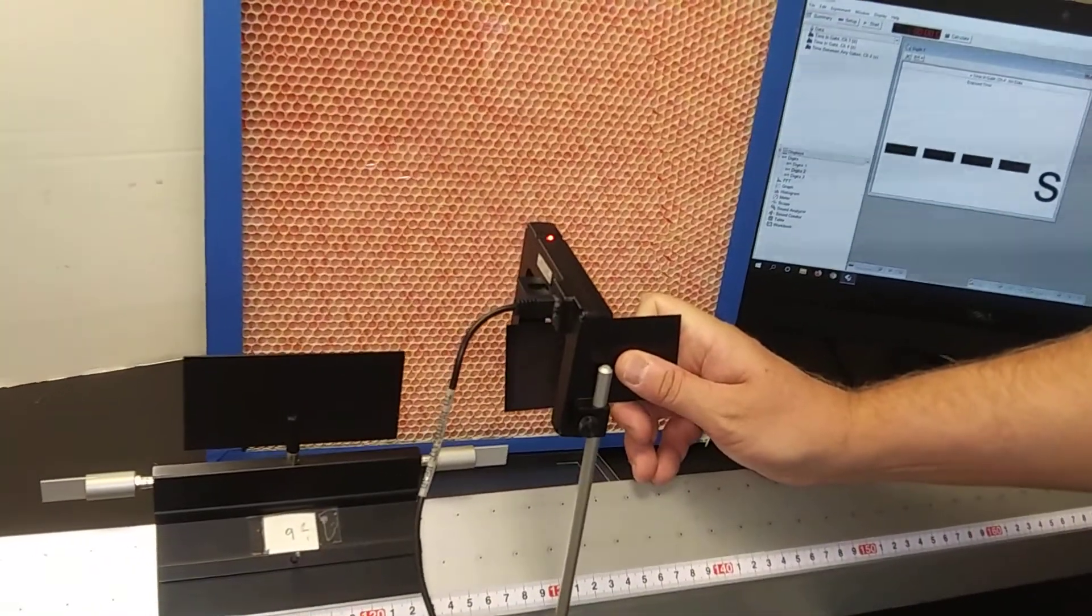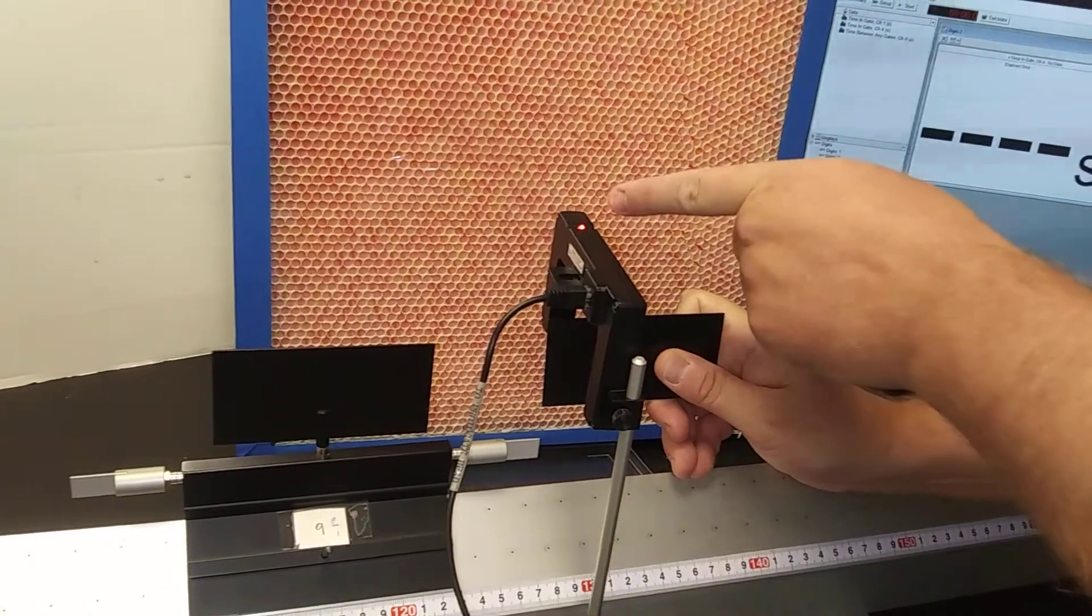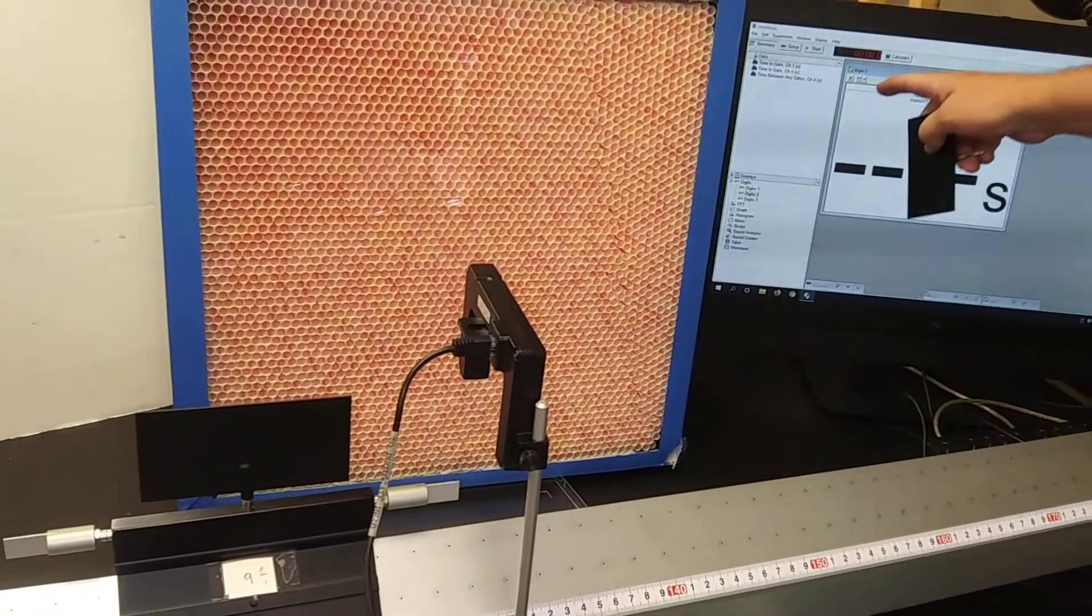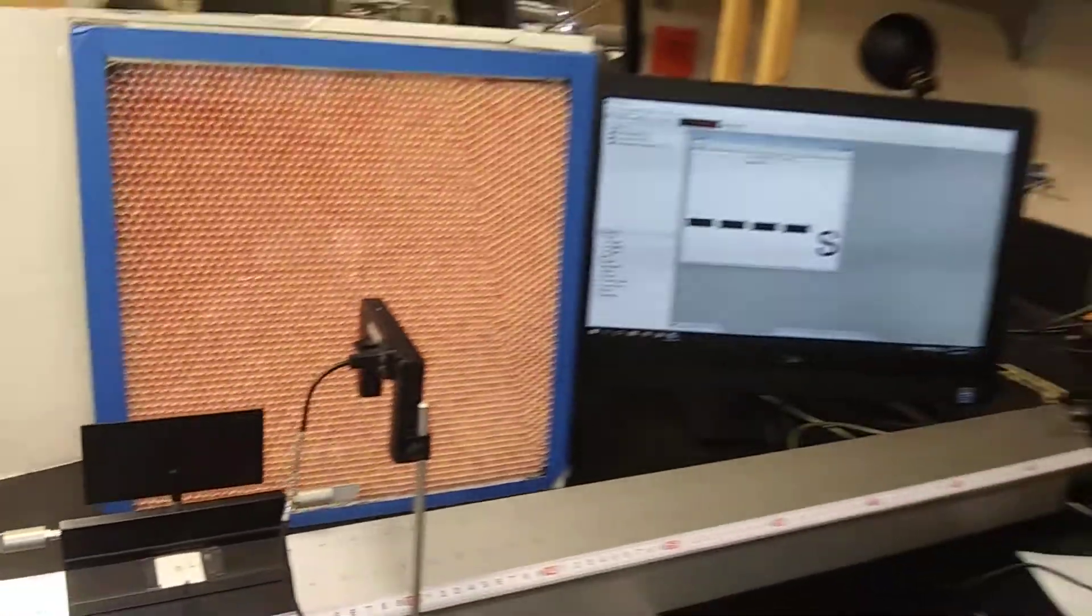When this blocks the infrared, we see the red light turn on, that causes the computer to start counting the time. So in this case, watch what happens here. I'm going to go ahead and start this.